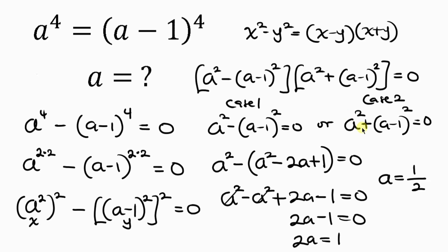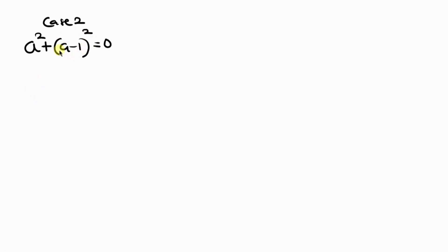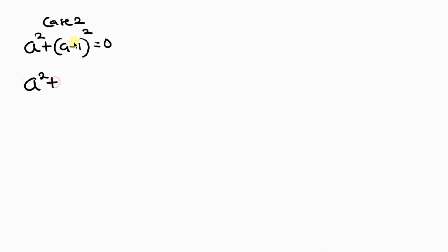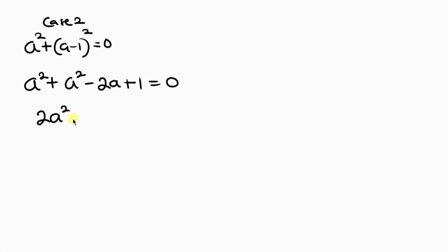Now let's look at Case 2 to find other values of a. We expand a minus 1 all squared to get a squared plus a squared minus 2a plus 1 equal to 0, since we have a positive outside the bracket. Simplifying, a squared plus a squared is 2a squared, so we have 2a squared minus 2a plus 1 equal to 0.